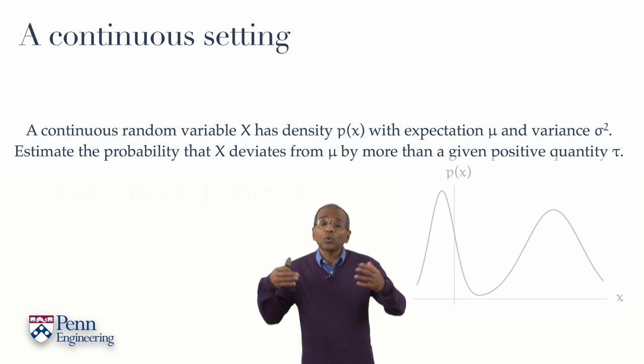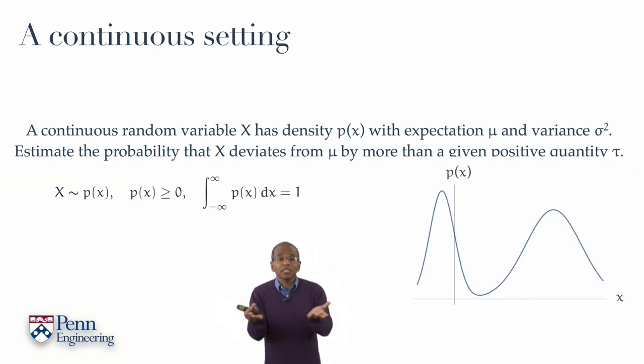First, our outcomes, our sample points take values on the real line. The probability measure is induced by a density function, p of x, which has to be non-negative. It has to satisfy the positivity axiom, and it has to be properly normalized to have unit area.